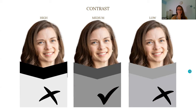The second step of analysis is to look at the contrast — is she high, medium, or low contrast? Because the distance between her hair color and skin color is in a medium spectrum, she's considered a medium contrast.